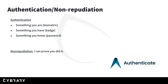Authentication and non-repudiation. For authentication, there are three concepts: something you are — like a fingerprint or iris scan, some kind of biometric; something you have — like a badge you scan at your workplace; and something you know — like your password. Non-repudiation means you can prove that someone actually did send that email and that it came from that specific person.